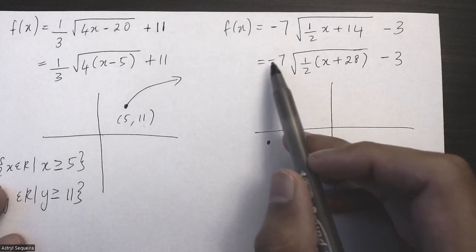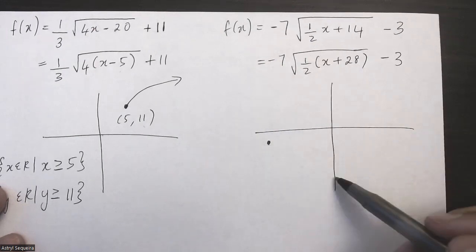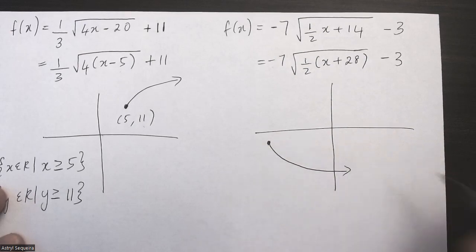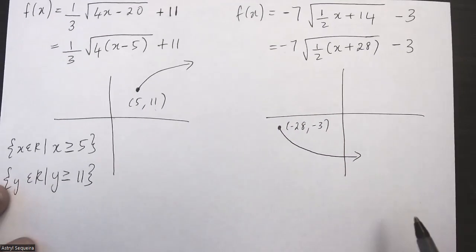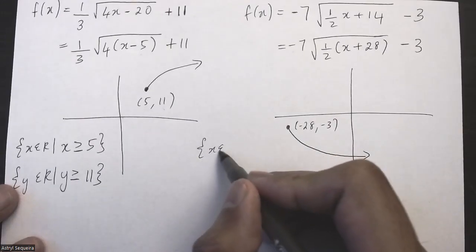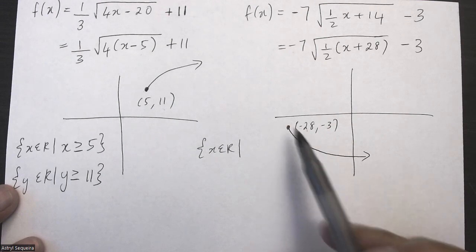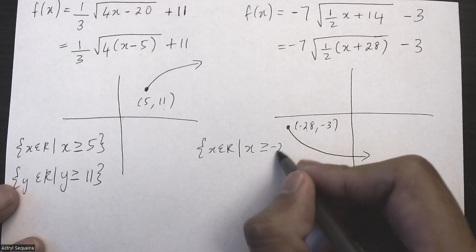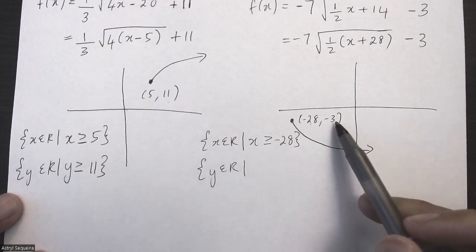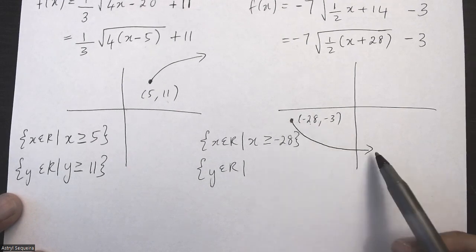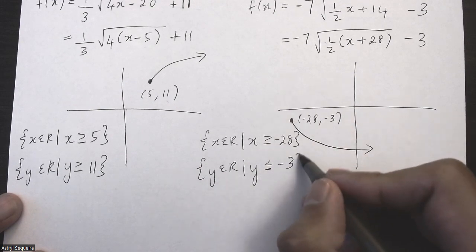In this one there is a reflection — the negative in front of the a value means a reflection in the x-axis, so the graph goes downward. The starting point is negative 28 and negative 3. The domain is x is an element of all real numbers such that x is greater than or equal to negative 28. The range is y is an element of all real numbers such that y is less than or equal to negative 3, because the graph is going downwards.